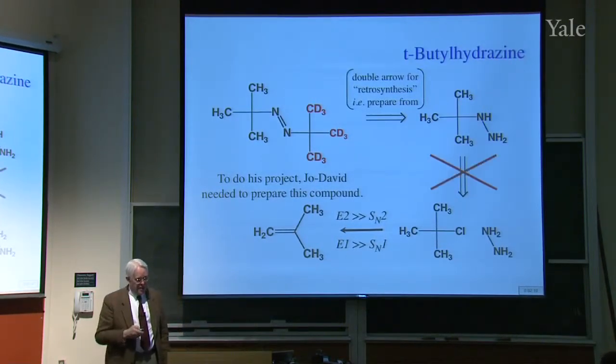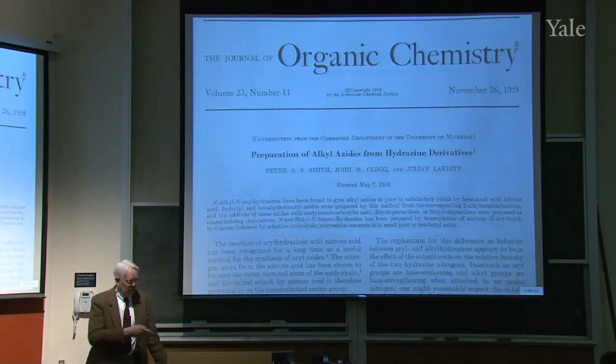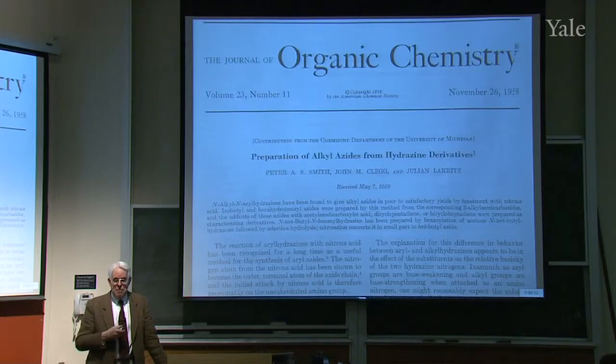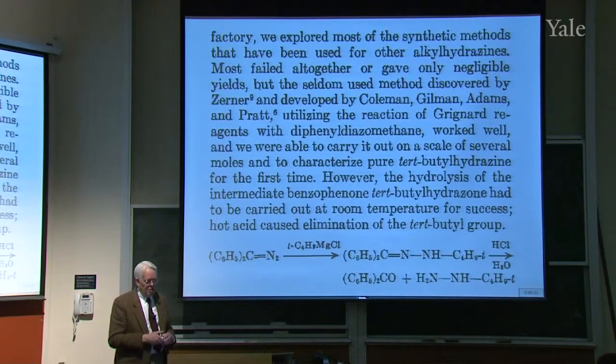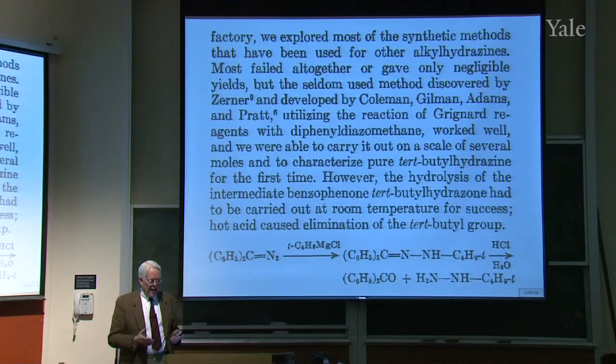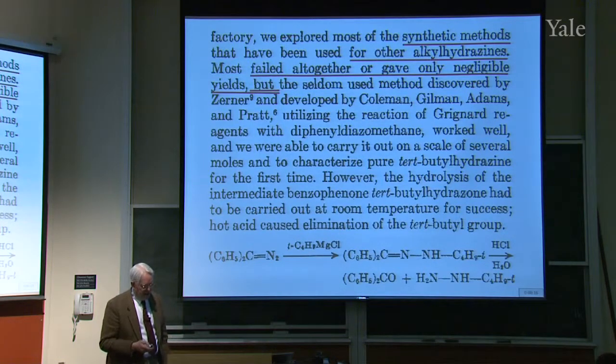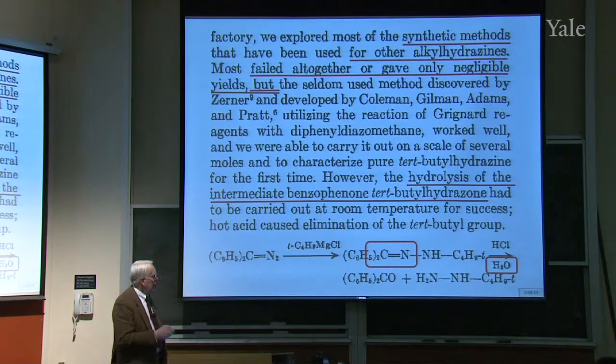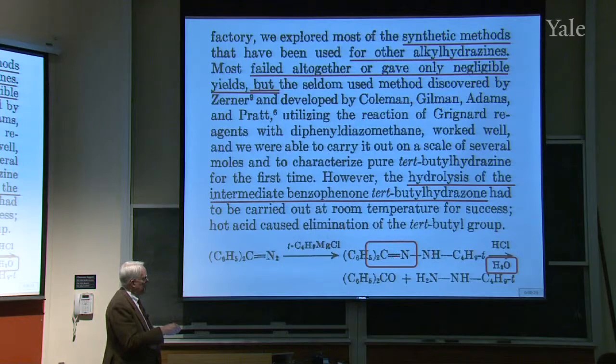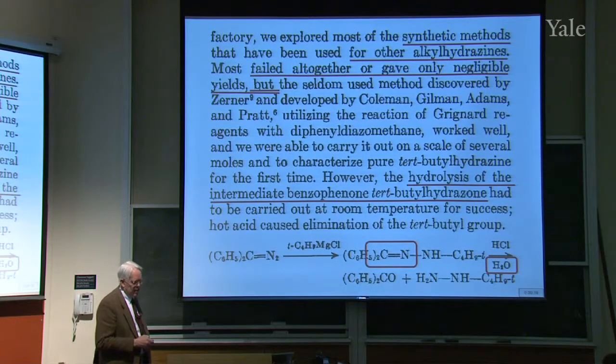Fortunately, there was in the literature this paper in the Journal of Organic Chemistry from 1958 about preparation of these hydrazines. We explored most of the synthetic methods that have been used for other alkyl hydrazines, but most failed altogether or gave only negligible yields when you tried to do it with T-butyl. But there was a seldom used method discovered by Zerner that worked well. It involved hydrolyzing this CN double bond. Reacting with water gave, from this half, a ketone, and on the right, the T-butyl hydrazine.